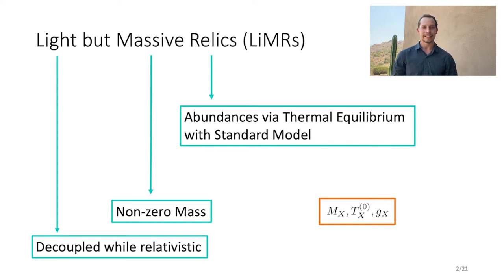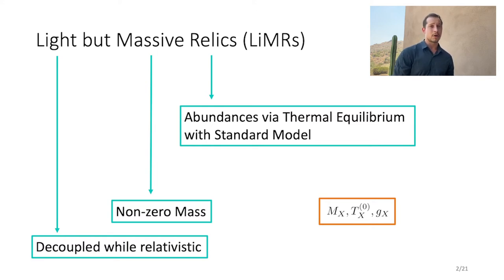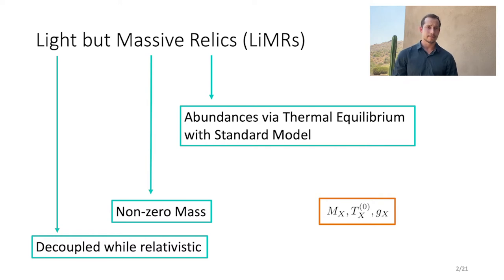A generic LEMUR will be fully defined by three quantities: its mass, its temperature today, and its degrees of freedom. In this case, only the degrees of freedom that thermalized with the standard model are important, so higher spin particles will have two degrees of freedom.